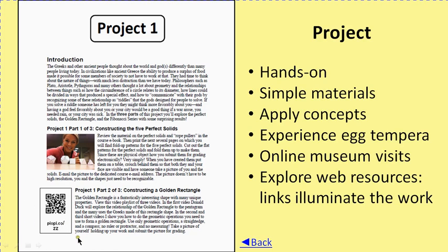Most assignments like this have links to supporting material, in many cases a tutorial showing you how to do it. The whole point is to get you hands-on experience with simple materials to apply concepts and experience things you're reading about — for example, egg tempera binder used with a powdered pigment or lake. Project three gets you into that. There are also online museum visits as part of project four, with links to explore web resources illuminating particular works.